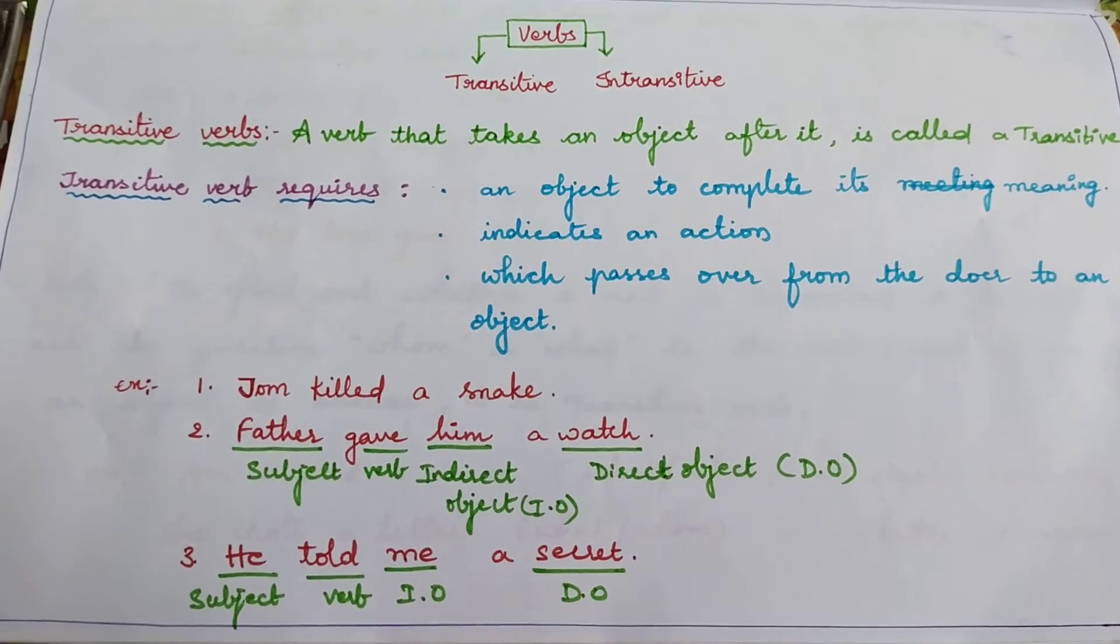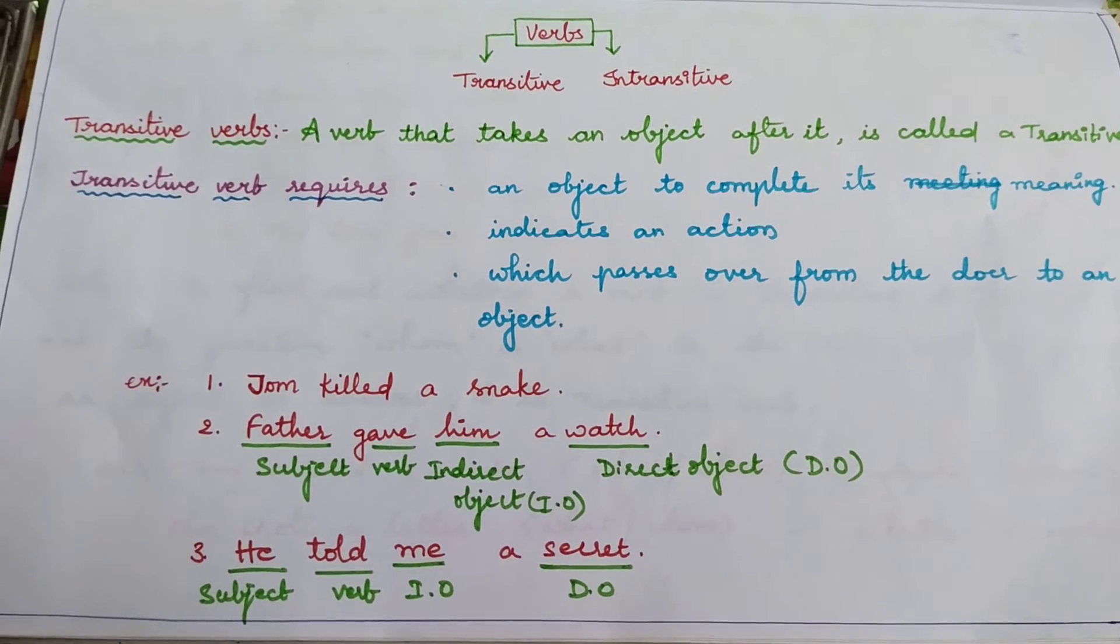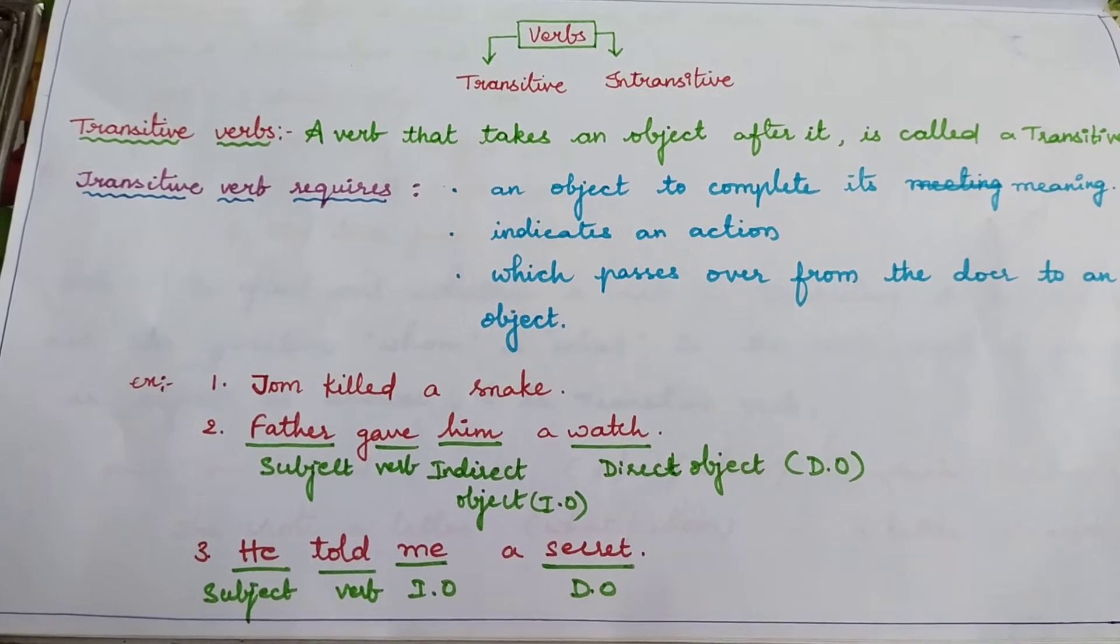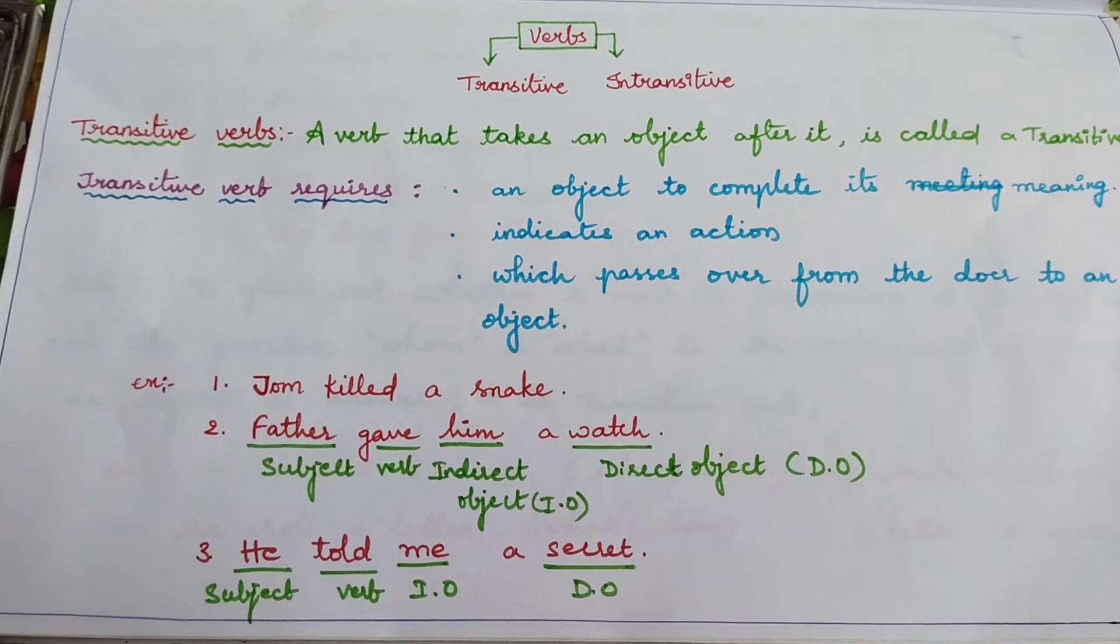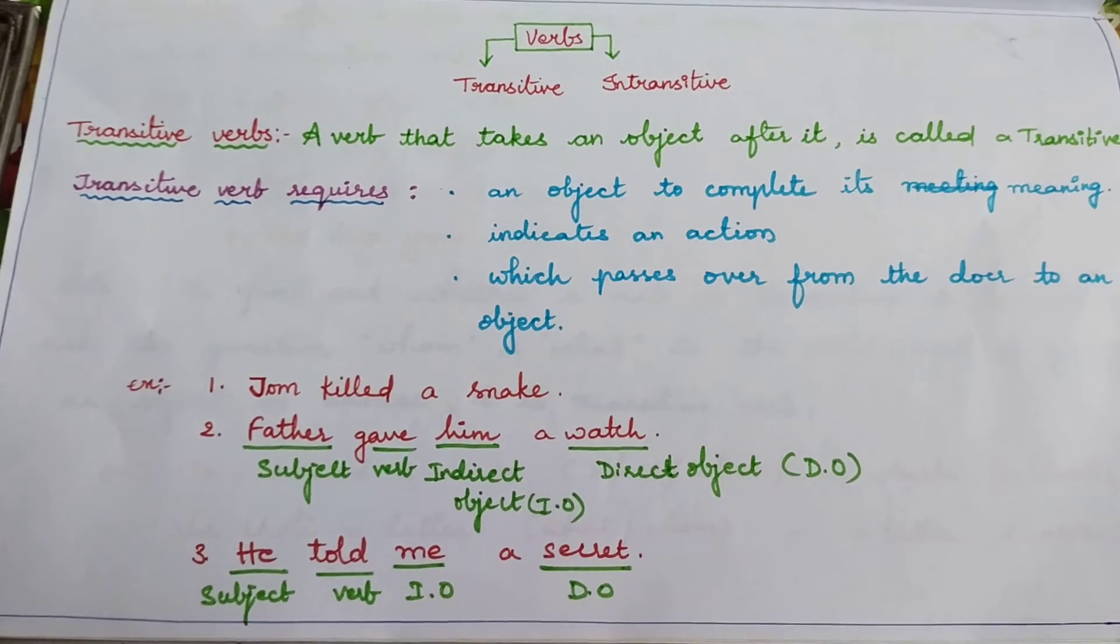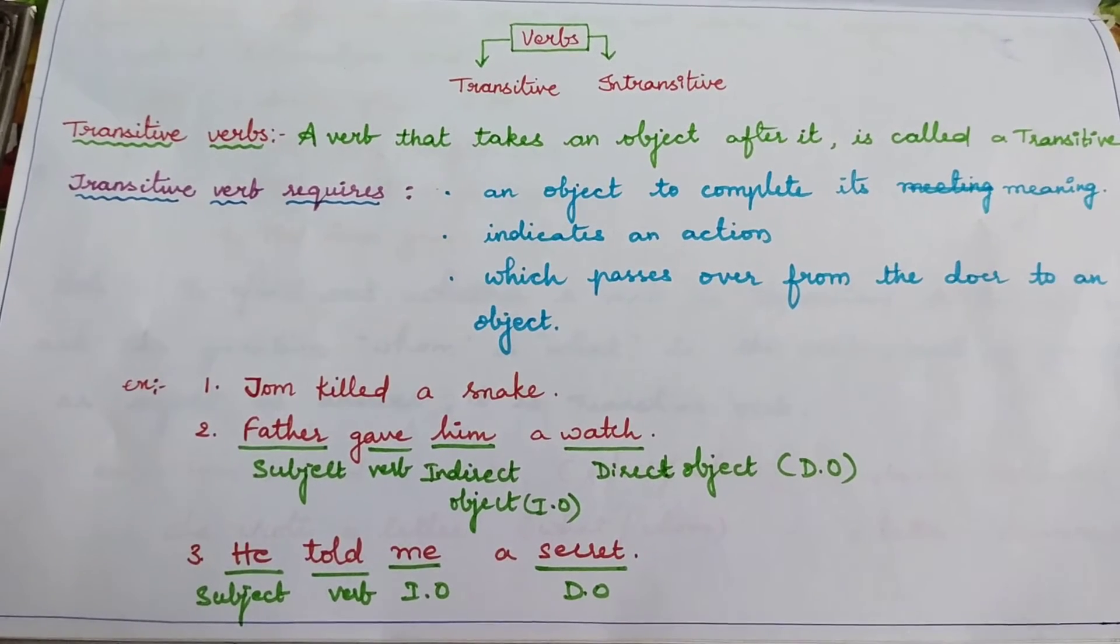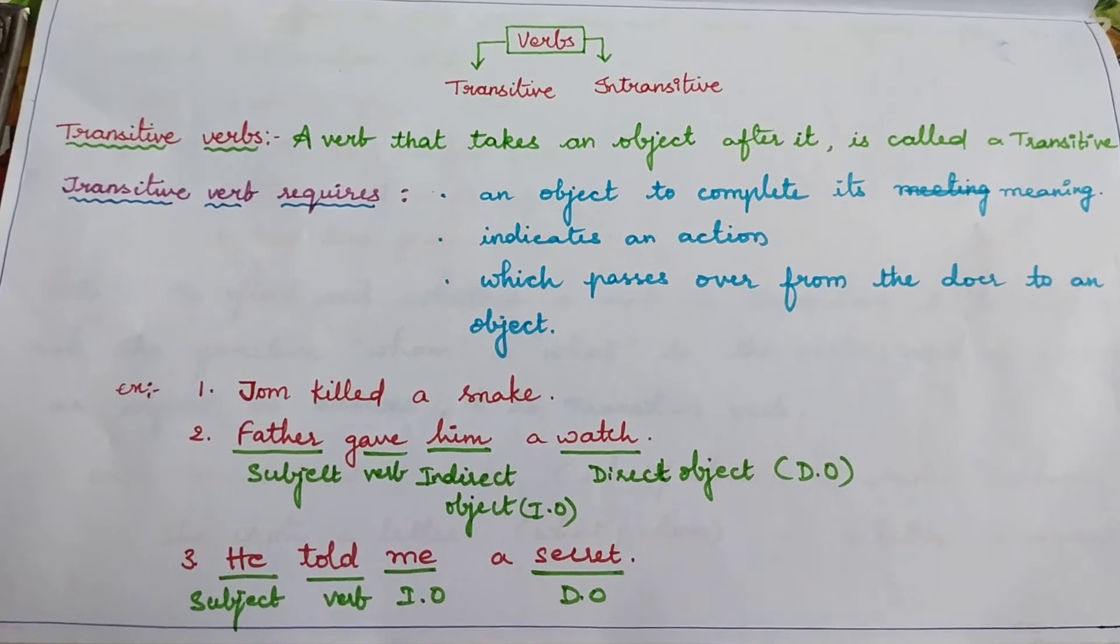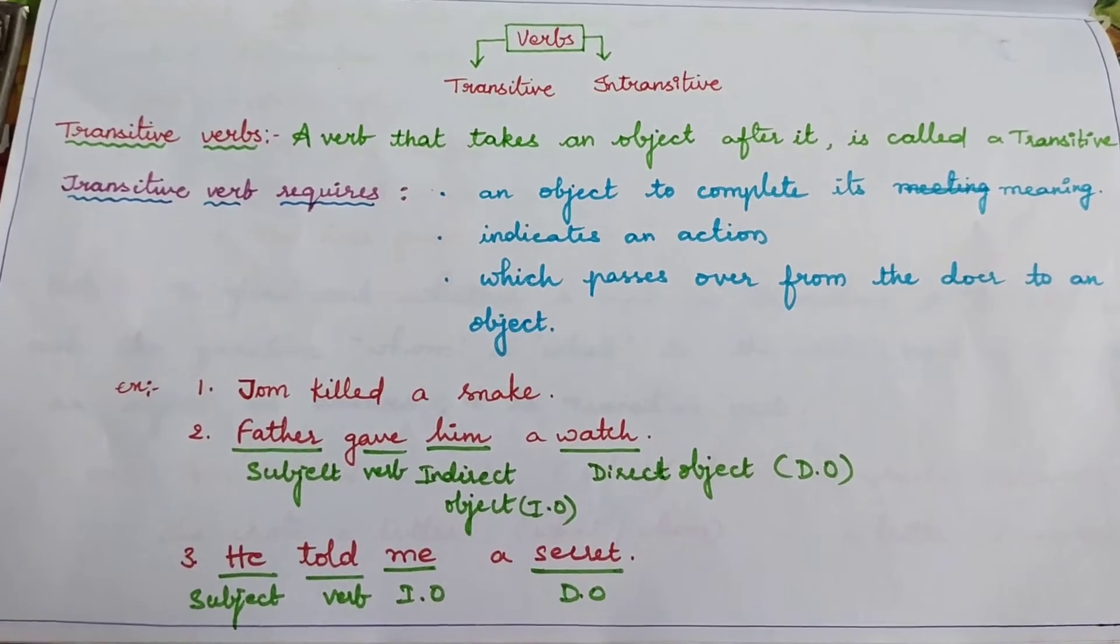He told me a secret. Who told? He. He is the doer of the sentence. He is subject. The secret from him to me is passed over. Such passing verb is called transitive verb. Told here is transitive verb.